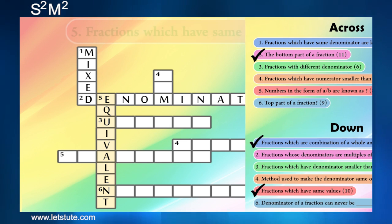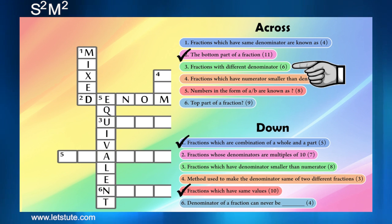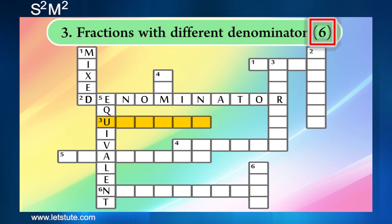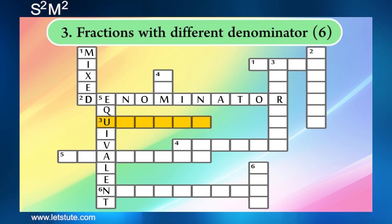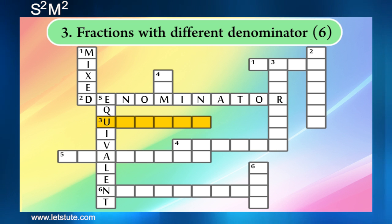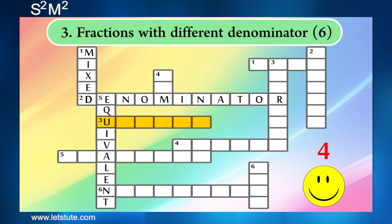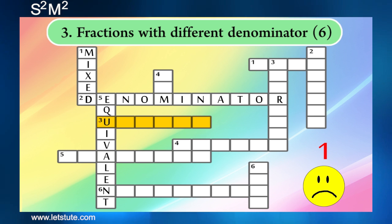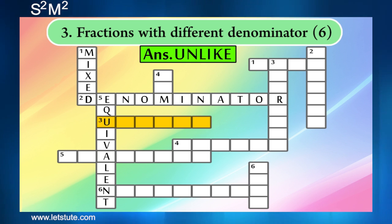And now we have the third one for the across, and the question says fractions with different denominators. So here we have to see that they said fractions, which means it's going to be a group of fractions. So when a group of fractions has different denominators, they are called unlike fractions.